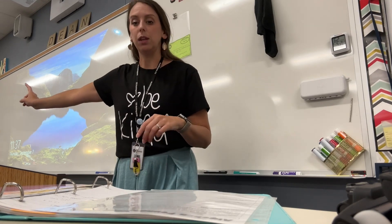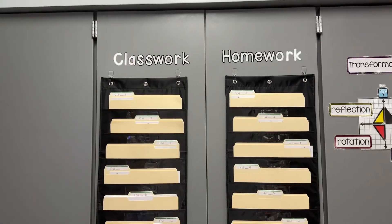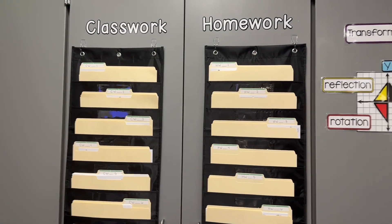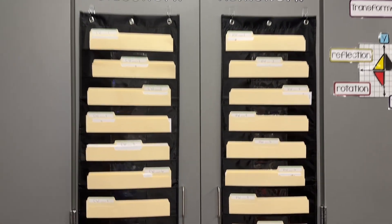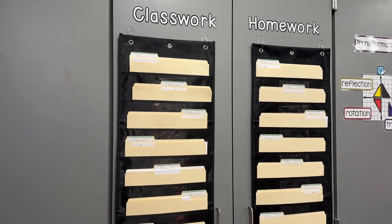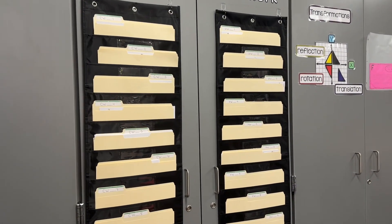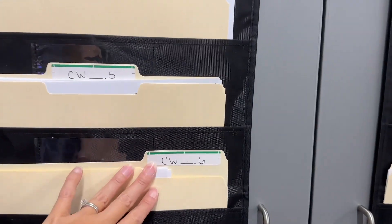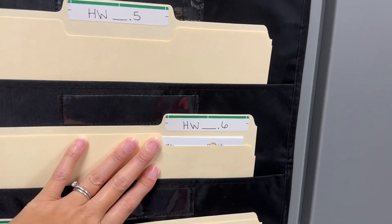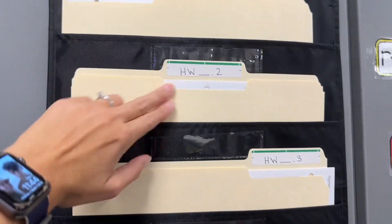Go ahead and pick up the answer sheet that's up there and we will get started. I just added labels above my absent work folder — classwork and homework — hoping that will help the students. I do have it labeled on each of the files as well. When students are absent, they'll come over here and know, 'Oh, I missed Tuesday,' look at the calendar on Canvas and realize they missed classwork 1.6 and homework 1.6, so they can grab the notes and homework 1.6. Once we get into unit two or three, it'll start over — 2.1, 2.2, and so on — so I can keep reusing this.